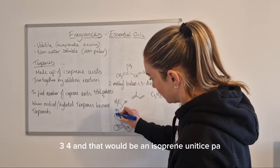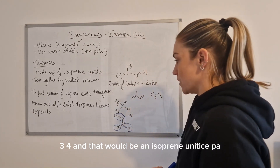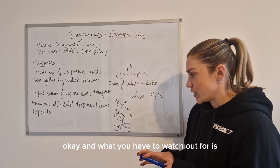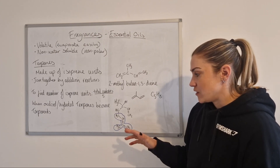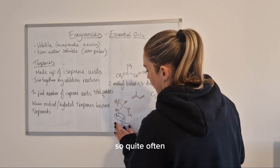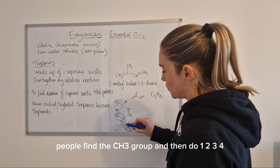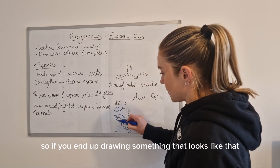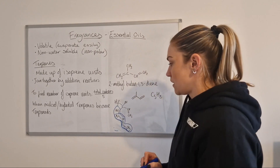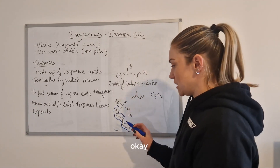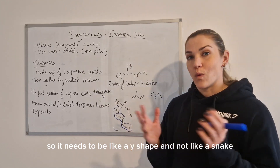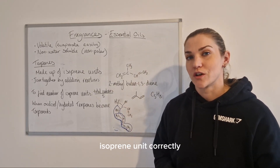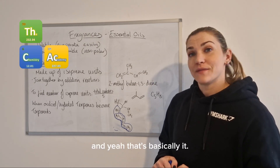Once you find the CH₃ branch as carbon two, go back one and count one, two, three, four — that gives you your isoprene unit. Watch out for not doing it like a snake: people often find the CH₃ group and count one, two, three, four in a straight line, but that's wrong. The isoprene unit needs to look like a Y-shape, not a snake. So yeah, that's basically it.